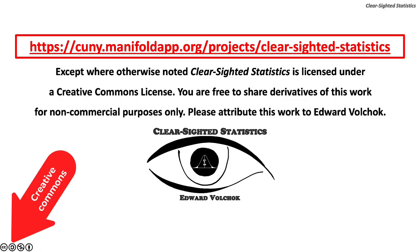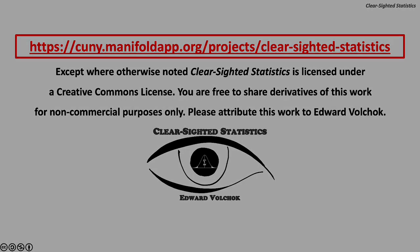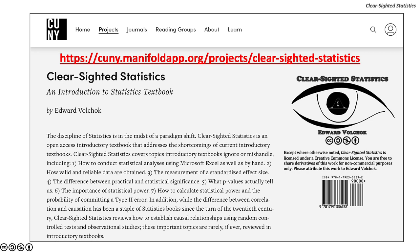Except where otherwise noted, Clearsighted Statistics is licensed under a Creative Commons license. You are free to share derivatives of this work for non-commercial purposes only. Please attribute this work to Edward Volchak. You can access Clearsighted Statistics for free, along with its Excel and PowerPoint files, on the CUNY Commons at https://cuny.manifoldapp.org/projects/clear-sighted-statistics.